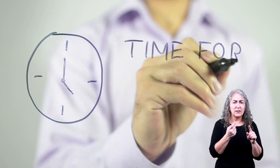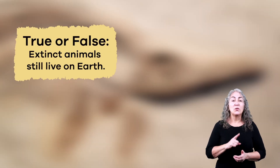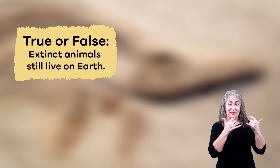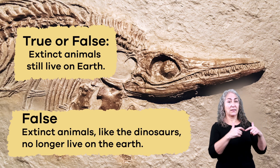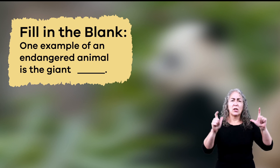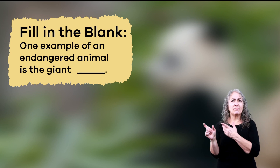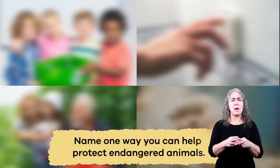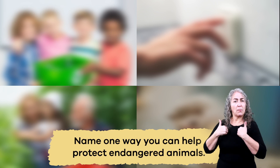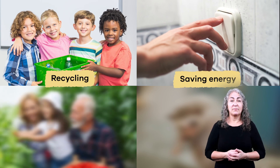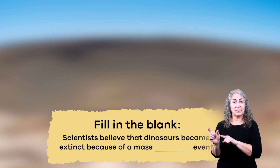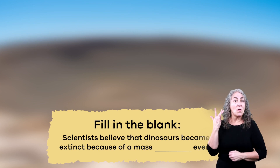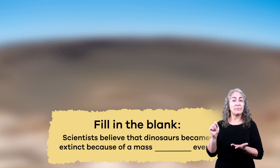Now that we have learned lots of new cool facts, let's review. True or false: extinct animals still live on earth. That's false — extinct animals, like the dinosaurs, no longer live on the earth. Fill in the blank: one example of an endangered animal is the giant panda. Name one way you can help protect endangered animals: recycling, saving energy, planting a garden, sponsoring an animal. Fill in the blank: scientists believe that dinosaurs became extinct because of a mass extinction event.